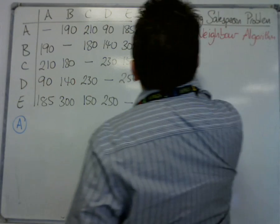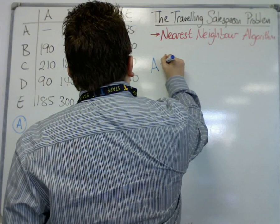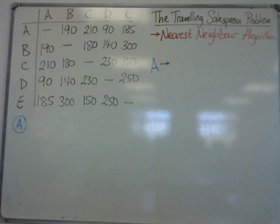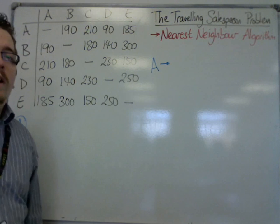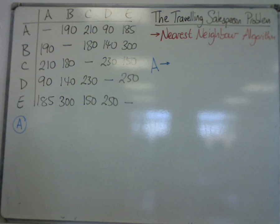So the nearest neighbor algorithm says, right, we're going to have to start at A, and we need to visit all of the other vertices and get back to where we started. Now the graph is complete, so that's sorted, that's all right.